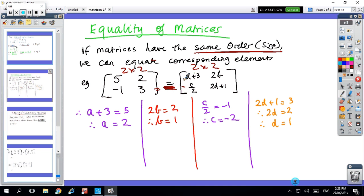This position here has to be the same as that number there in the corresponding position. So a plus three equals five, and then you solve it. Then this 2b is in the same position as two. Then c over two is in the same position as minus one. And finally, this number is in the same position as that number there, and so we can solve it.